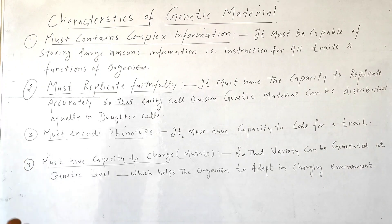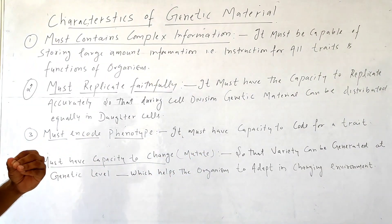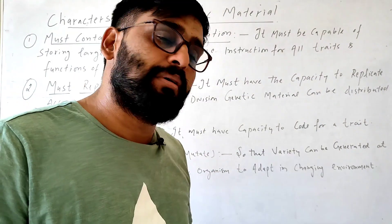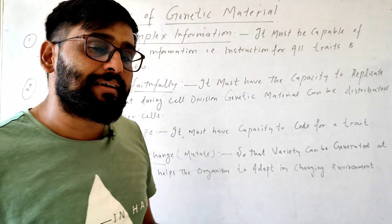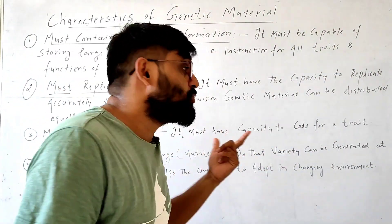Third is must code phenotype. Genetic material must code for a phenotype, or you can say trait. For example, traits may be eye color, hair color, skin color, height, and many others. So it must code for a trait.